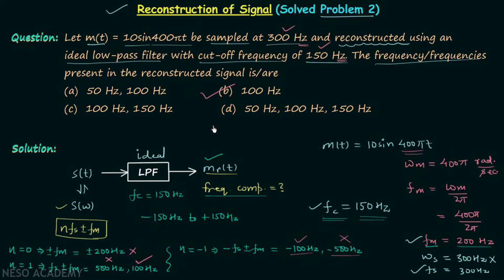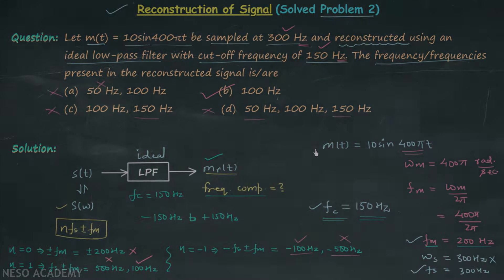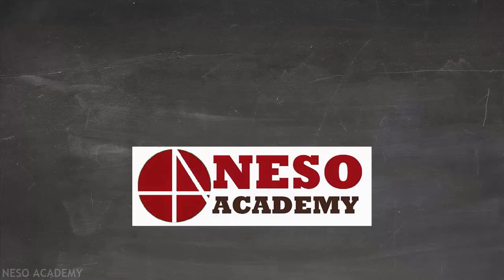Therefore, option B is the correct answer. Option A is wrong because it includes 50 Hz, which will not be present. Option C is wrong because it includes 150 Hz. Option D is also wrong as it includes 150 Hz and 50 Hz. So the final answer is option B. That is all for this lecture — see you in the next one.